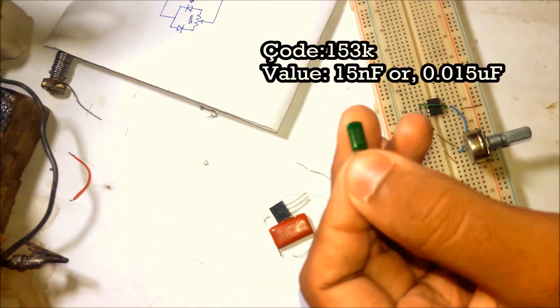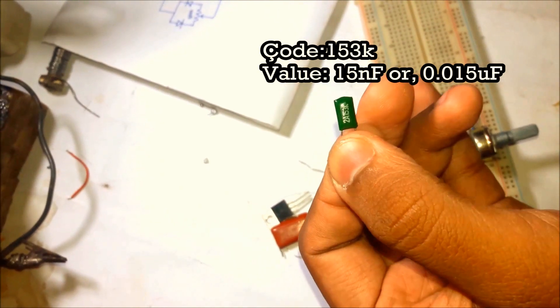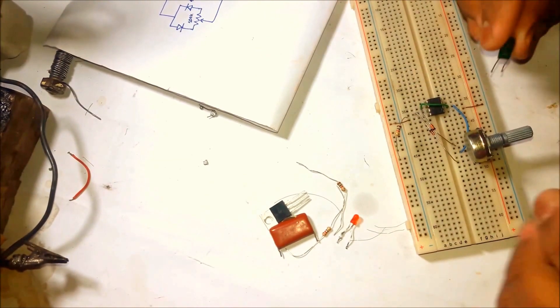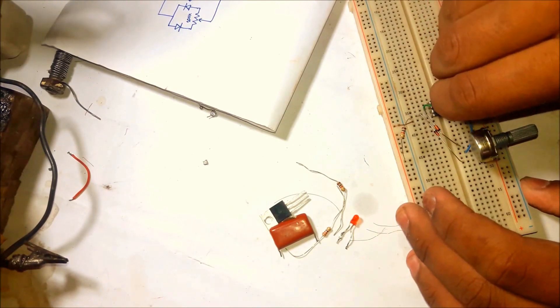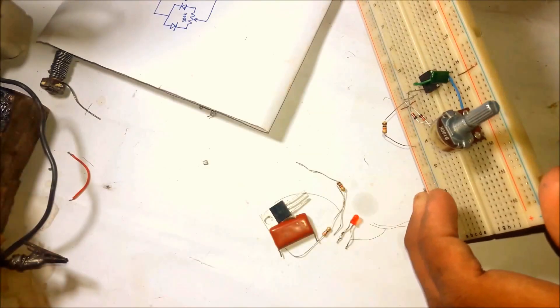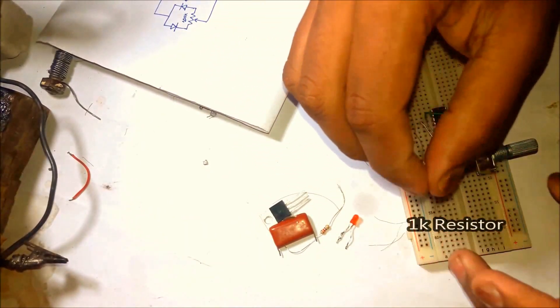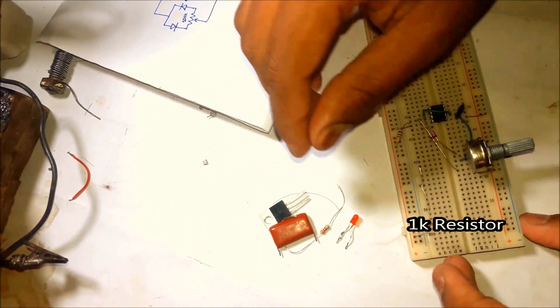Now set the 50 nanofarad capacitor from pin 2 to the ground. Now make the power indication LED with the 1 kilohm resistor in series.